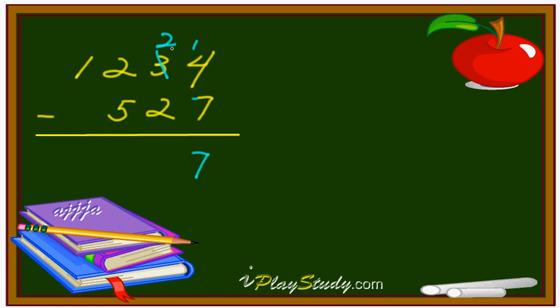Now, the second number from the right hand side. 2 minus 2, which is easy. It's going to be nothing. That's it, 0.